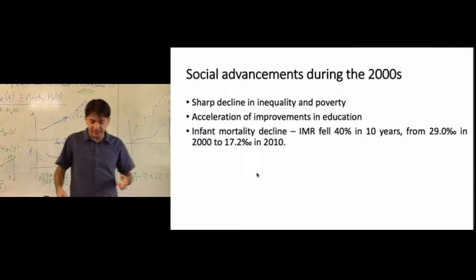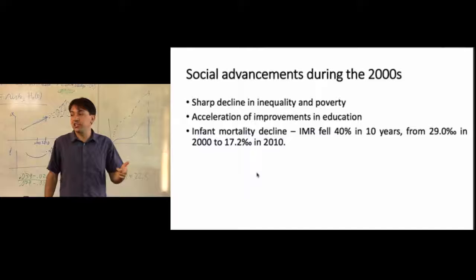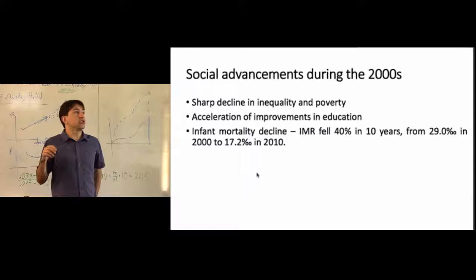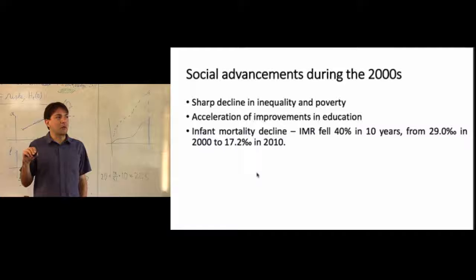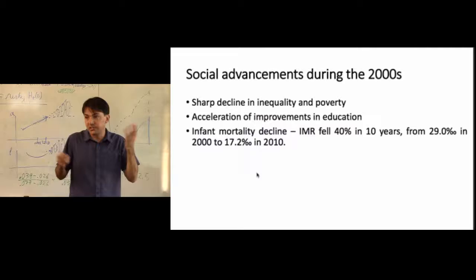I discuss potential reasons for this. Even for states already below replacement level, there was an acceleration of the fertility decline during the 2000s. This coincided with important social advancements in Brazil: sharp declines in inequality and poverty, acceleration of improvements in education, and a 40% drop in infant mortality in just ten years — a huge difference.